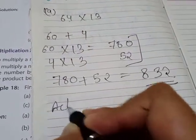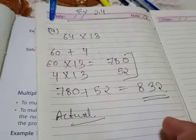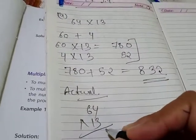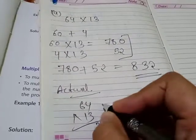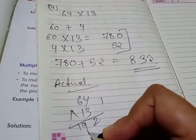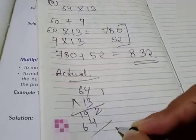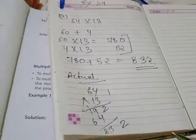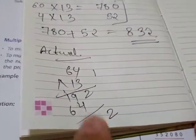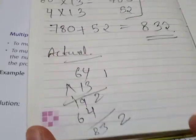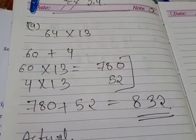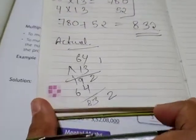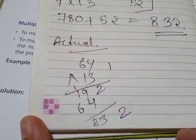Now we verify with actual multiplication: 64 into 13. 3 fours are 12, write 2 carry 1; 3 sixes are 18 plus 1 is 19, write 9 carry 1. Then 1 four is 4, 1 six is 6. Adding: 832. You can see that the actual multiplication also gives 832.